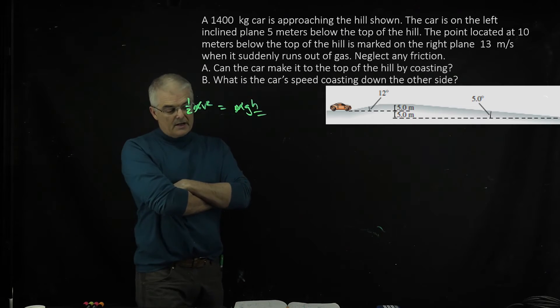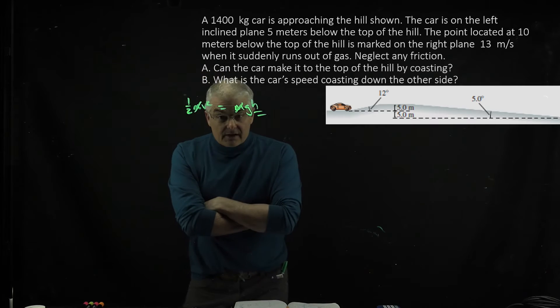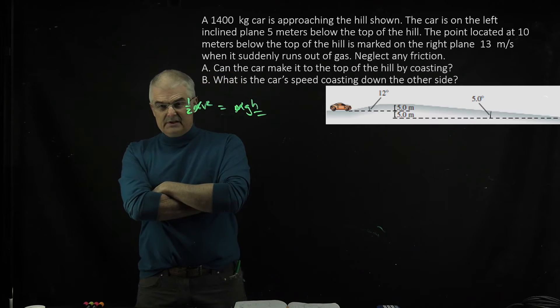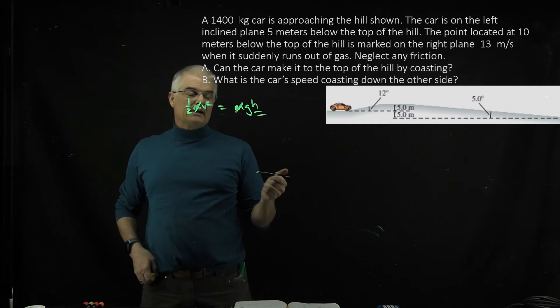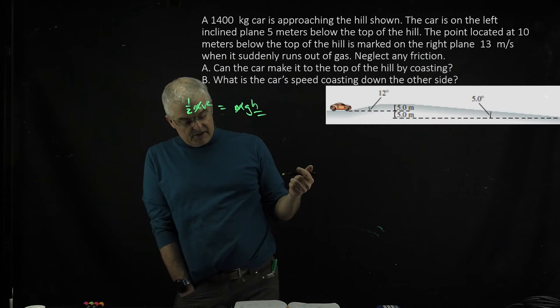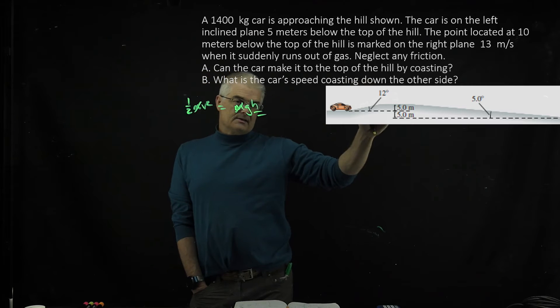But the trick is certainly part B, because the question is what's the car's speed coasting down the other side? So you want to find the speed on the other side - it's all about keeping track of the energy. The first thing I had to find is what is his velocity at the top of the hill?